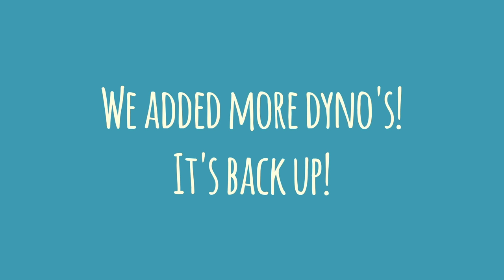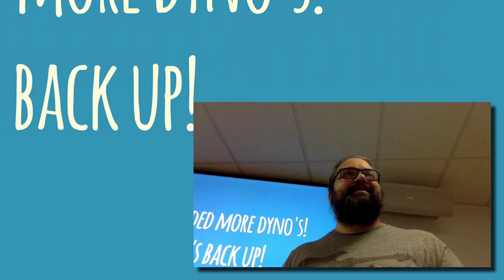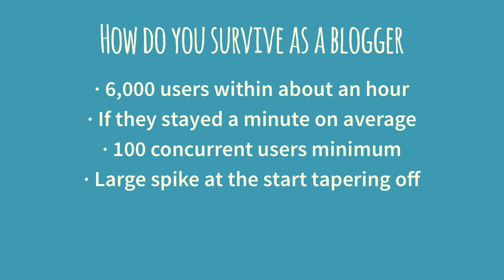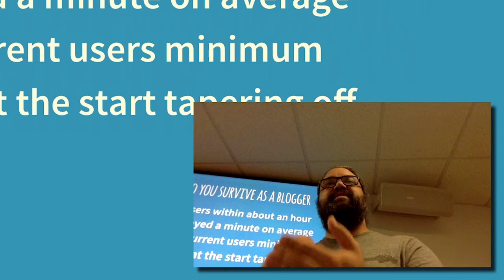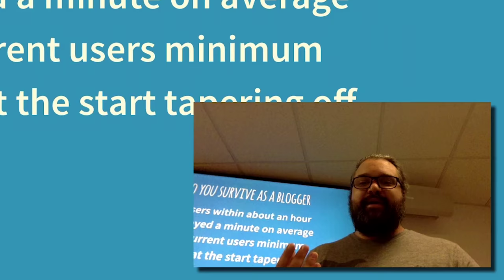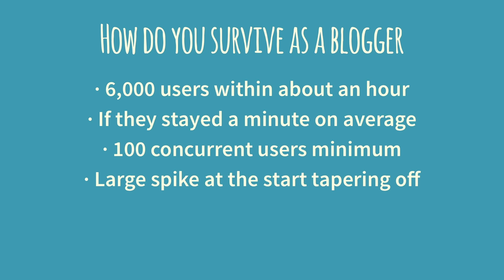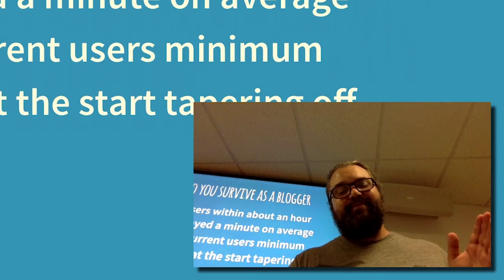People would say it's back up, and there'd be a slew of comments, but in general you're not going to get the bulk of the traffic. For me, the question was how do you survive as a blogger? I estimated that Hacker News probably sends about 6,000 unique users in about an hour, and if they spent about a minute on average, that's like 100 concurrent users minimum. I think that's pretty much going to take down most shared WordPress-type installations, and there's probably a large spike at the beginning that makes it even worse.